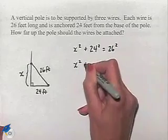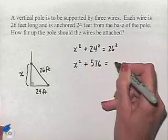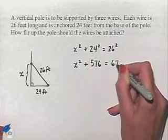Let's evaluate. 24 squared is 576. 26 squared is 676.